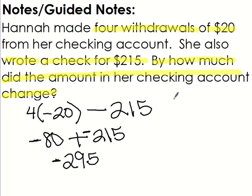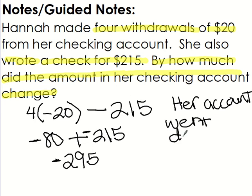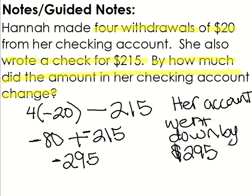So it's negative 295. So her account lost, went down, whatever you want to say, by $295. Because that's what I asked. How much did her amount in her bank account change? It went down by 295.